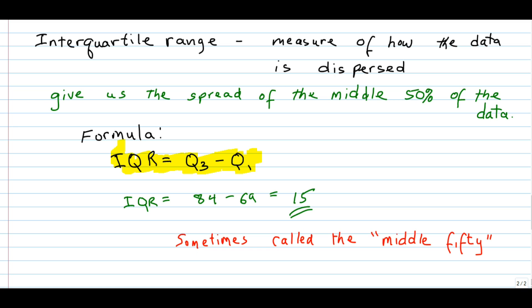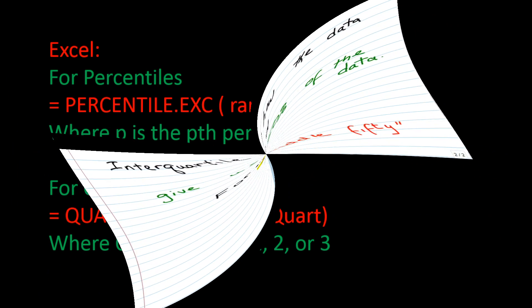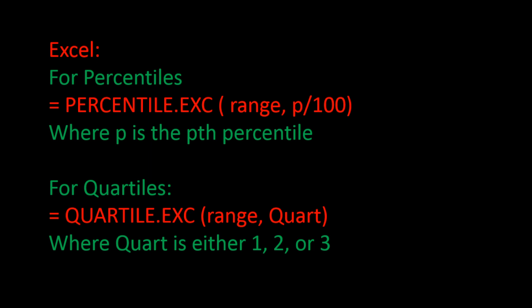We can use Excel to calculate the percentiles and quartiles by using the following Excel functions. For percentiles, we type in equals, which tells Excel it's a formula, then percentile.exc, then the range of the cells, then P divided by 100, where P is the percentile. We can use this formula for quartiles by putting in a P of 25, 50, or 75, or we can use the Excel function equals quartile, where you type in a 1, 2, or 3 for the quartile value. Let's see how this is done.